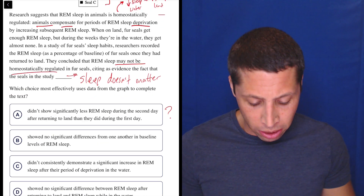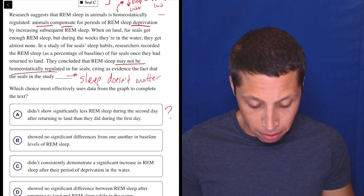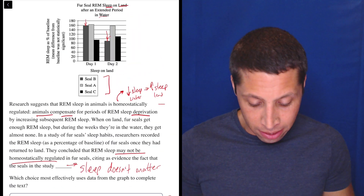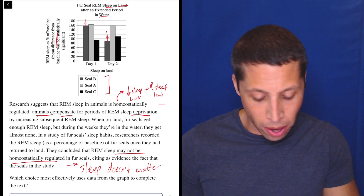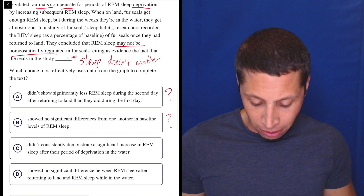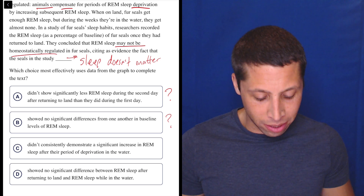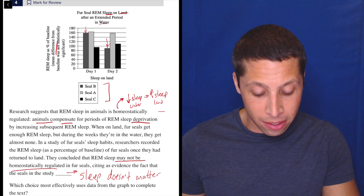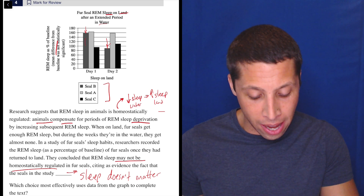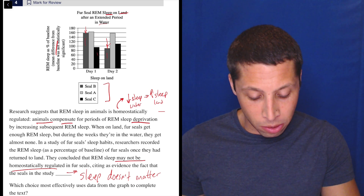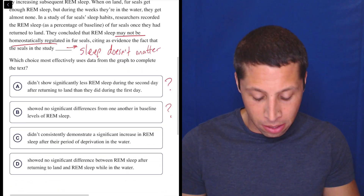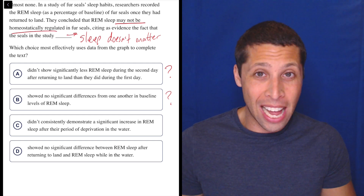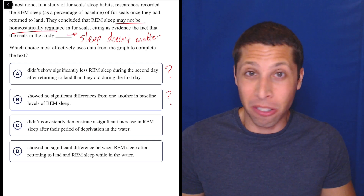Moving on. Choice B: they showed no significant differences from one another in baseline levels of REM sleep. But the baseline isn't here — this graph shows differences from the baseline — so I don't know the baseline. Choice C: they didn't consistently demonstrate a significant increase in REM sleep after their period of deprivation in the water. Well, this one is high then becomes low, this one is low then becomes higher, this one's just the same. The pattern is there is no pattern.